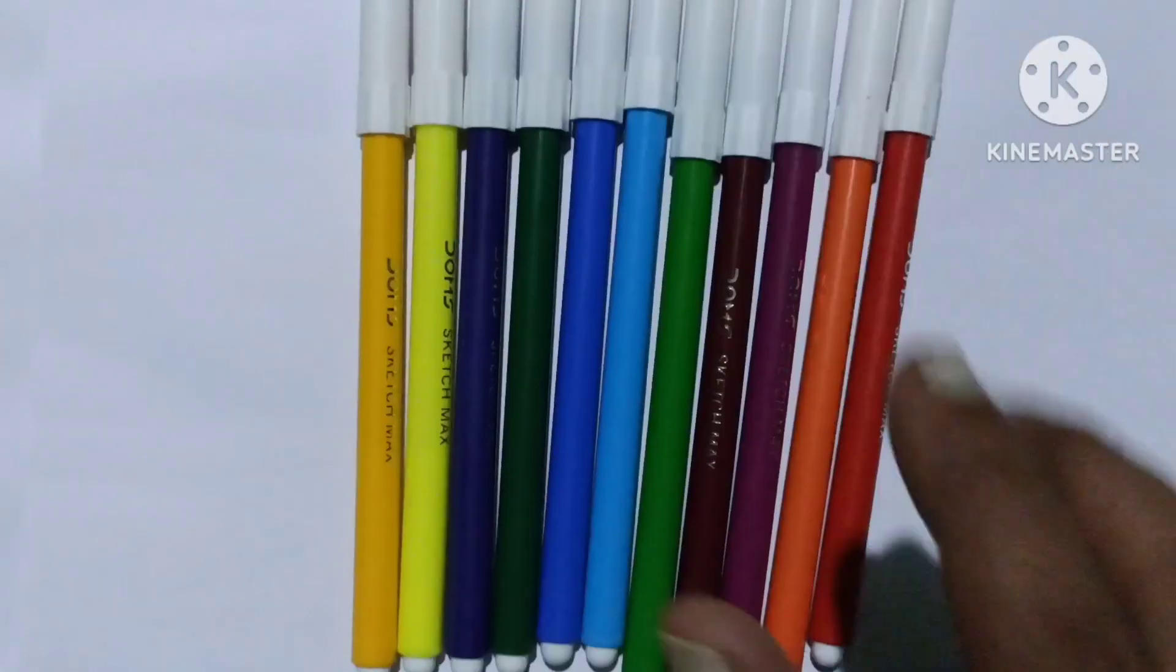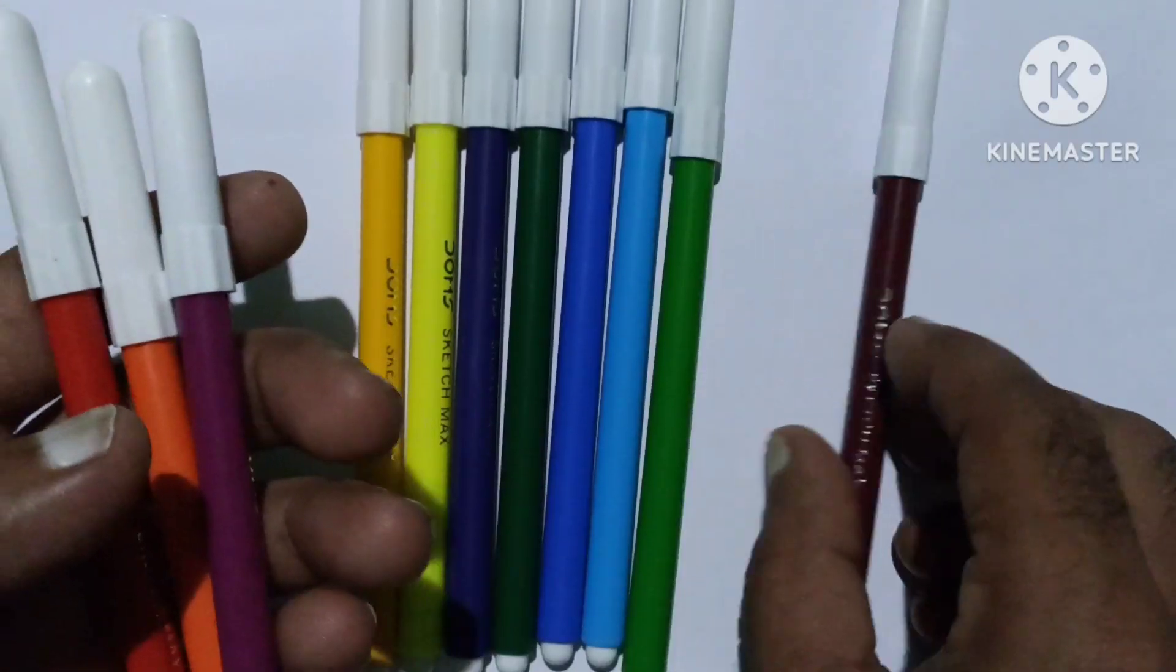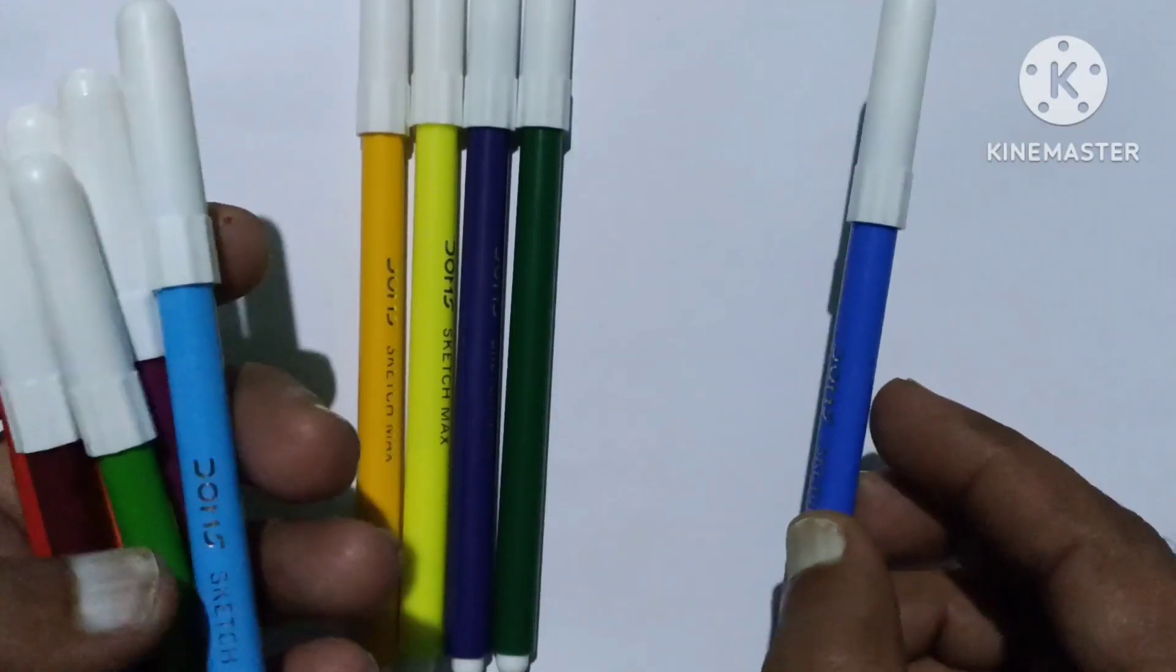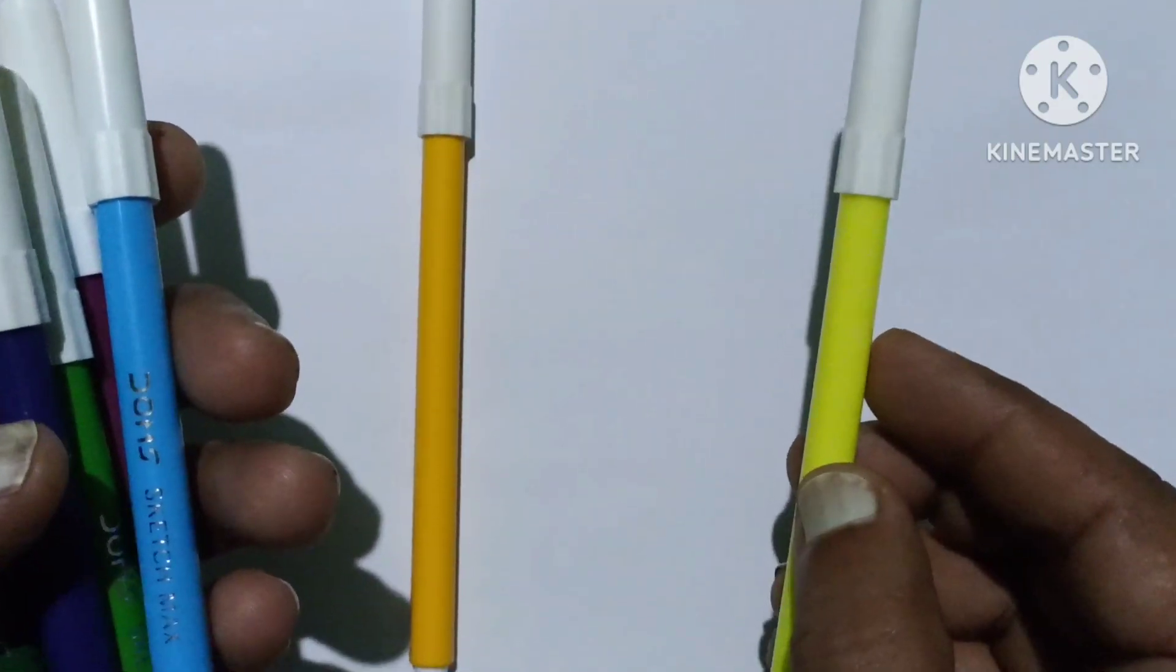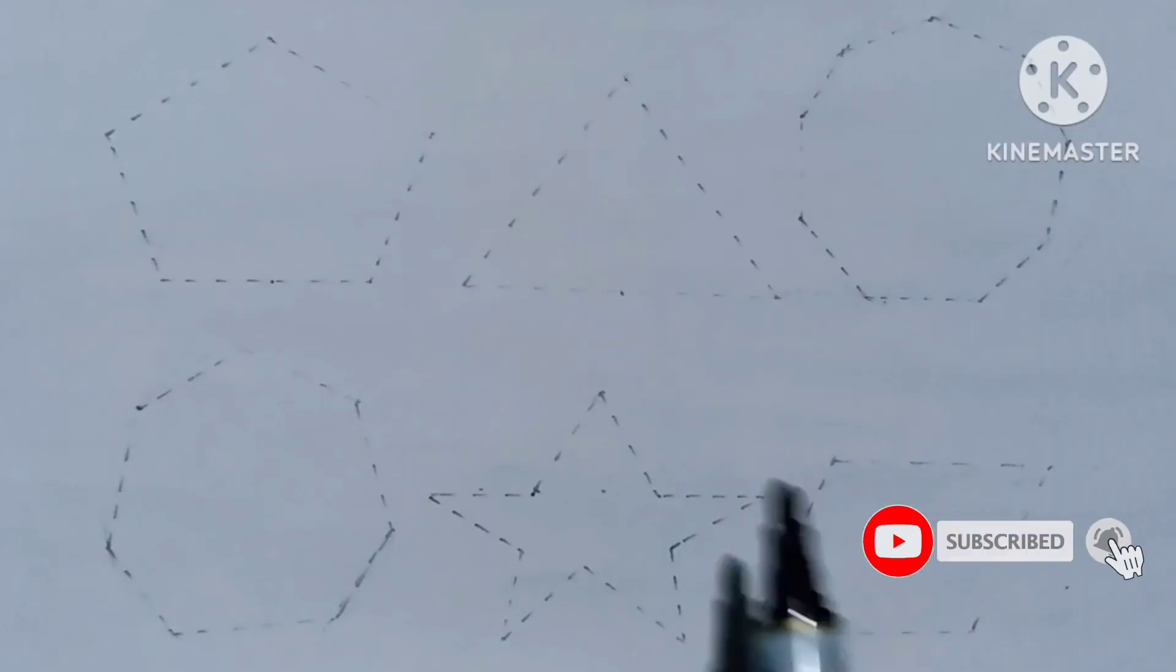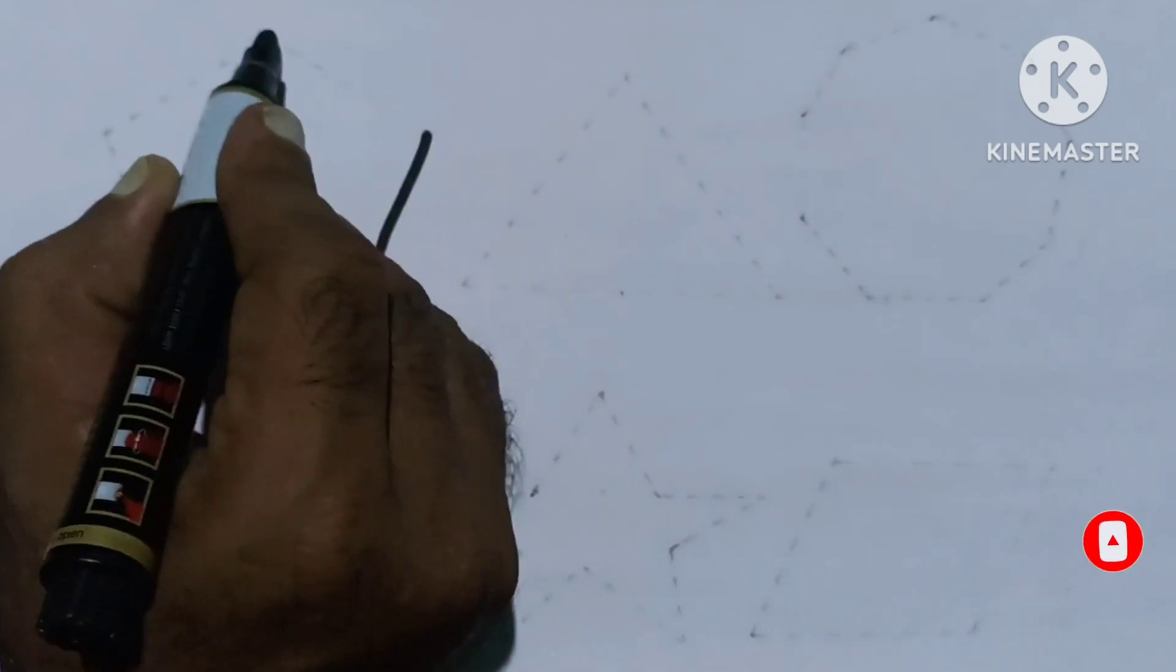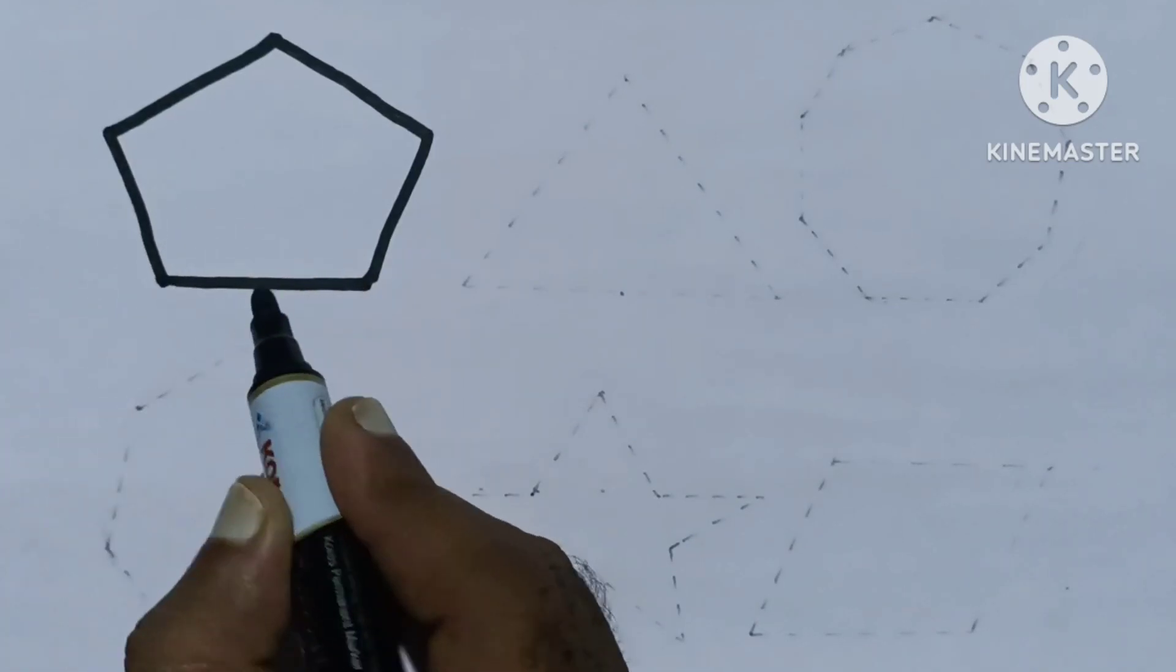Hello, let's learn some colors: red, orange, pink, brown, green, sky blue, blue, forest green, purple, yellow green, and deep yellow. Let's draw, learn, and color some shapes. Pentagon.